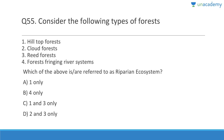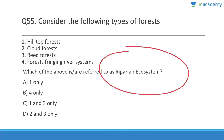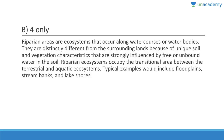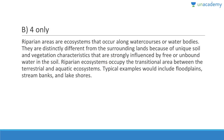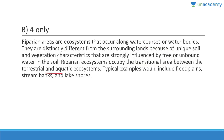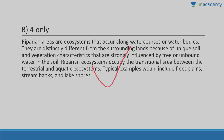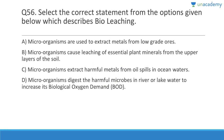Question fifty-five: Consider the following types of forest — hilltop forest, cloud forest, reed forest, forest fringing river system. Which are referred to as a riparian ecosystem? Answer is four — forests fringing river systems. Riparian areas are ecosystems that occur along watercourses or water bodies. They are distinctly different from surrounding lands because of unique soil and vegetation characteristics strongly influenced by free or unbound water in the soil. They occupy transitional areas between terrestrial and aquatic ecosystems; examples include floodplains, stream banks, and lake shores.